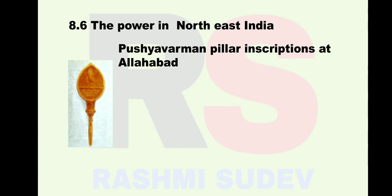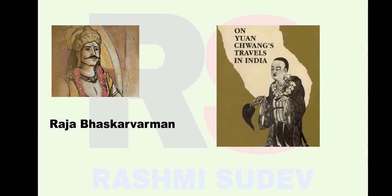In epics like the Ramayana and Mahabharata, the name Pragjyotisha is used for Kamarupa. The capital of the state was Pragjyotishpura, today known as Guwahati in Assam. In a book named Periplus of the Erythraean Sea, Kamarupa is mentioned as the region of Kirata people. The Kamarupa kingdom extended over the Brahmaputra river basin, Bhutan, and parts of Bengal and Bihar. During King Bhaskaravarman's rule, Xuanzang visited Kamarupa.